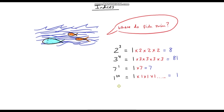Let's say we've got 8 to the power of 0. This might look a bit confusing but let's just work through it. With all indices we always start with 1, and this time we're going to multiply by 8 zero times — or another way to think about it: we're not going to multiply by 8 at all. So our answer is just 1. 8 to the power of 0 is just 1.